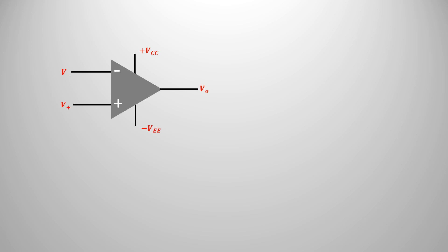An operational amplifier has two types of voltage gain. If the input of an operational amplifier is not fed back from the output, it is called an open-loop operational amplifier, whose voltage gain is called open-loop voltage gain. This is the ratio of the output voltage and the difference of the input voltages — that is, the difference of the non-inverting terminal voltage and the inverting terminal voltage. It is also called internal voltage gain.